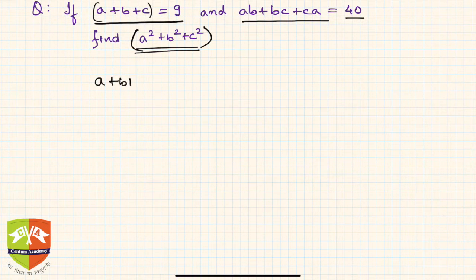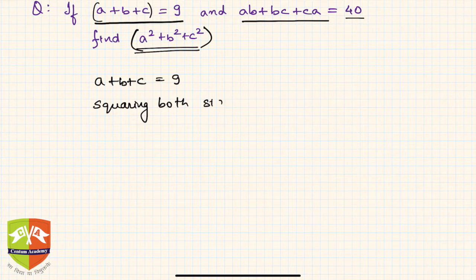Let us say a plus b plus c is equal to 9. So squaring both sides, what will you get? You will get a plus b plus c whole square is equal to 9 square.